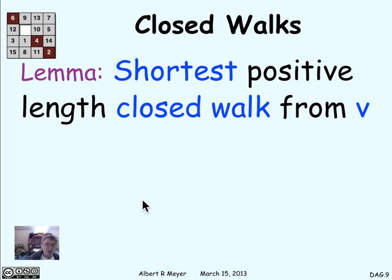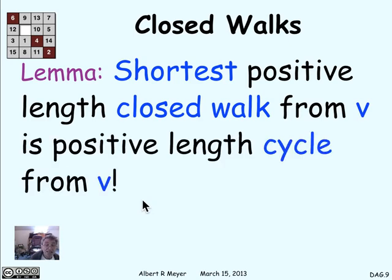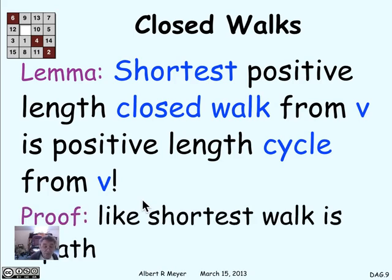We have a straightforward lemma about cycles and closed walks: the shortest positive length closed walk from a vertex to itself is a positive length cycle starting and ending at that vertex. The reasoning is basically the same proof that says the shortest walk between two places is a path. If you have a closed walk from v to v and there's a repeat in it other than at v, you could clip out the piece between the repeat occurrences to get a shorter walk. So the shortest closed walk can't have any repeats — it's got to be a positive length cycle.